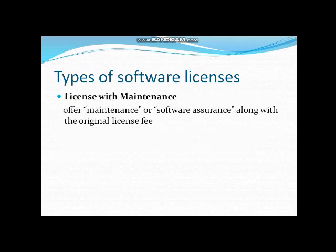License with maintenance: this type of license offers maintenance or software assurance along with the original license fee. It comes with specialized or customized softwares made for specific organizations — like banks, which use software with a maintenance license so that if any problem arises, the vendor will maintain and repair the system. So these are the 9 types of software licenses. Before downloading any software, first check which type of license it is: if GNU is there, it is open source and you are free to download it; for any other type, first read the instructions. Goodbye, stay safe, stay at home.